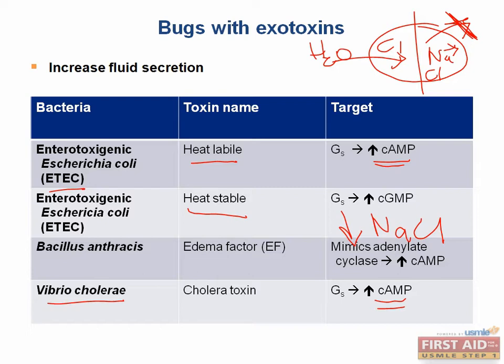To summarize: labile causes increased cyclic AMP, stable causes increased cyclic GMP. A helpful mnemonic — labile is in the air, stable is on the ground.